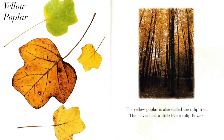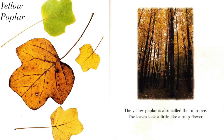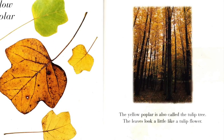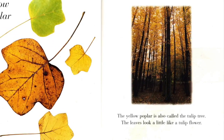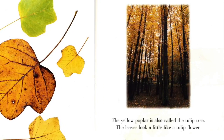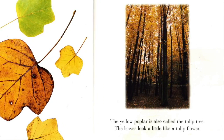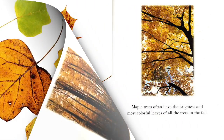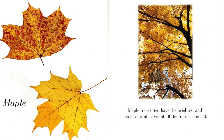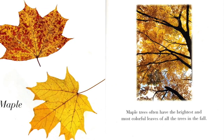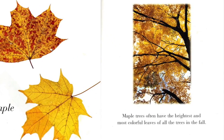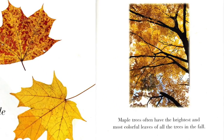Yellow poplar. The yellow poplar is also called the tulip tree. The leaves look a little like a tulip flower. Maple. Maple trees often have the brightest and most colorful leaves of all the trees in the fall.